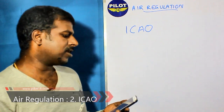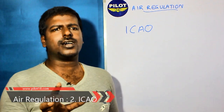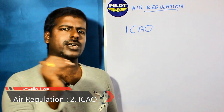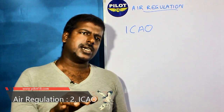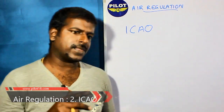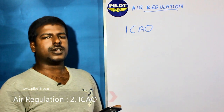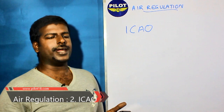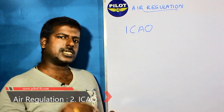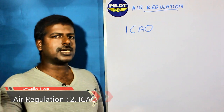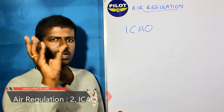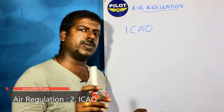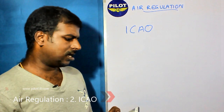Annex three covers meteorological services for international air navigation. The purpose of all these annexures is to maintain uniformity between all member nations — uniformity in procedures, equipment, aircraft, and technologies used. ICAO annexures maintain standards for equipment, rules, procedures, and licenses.